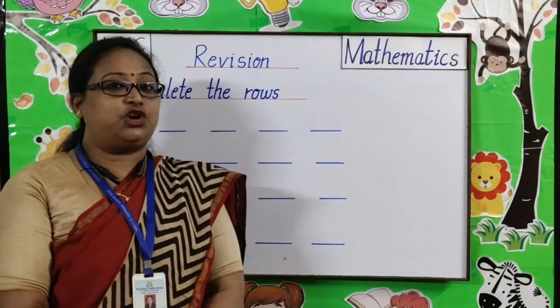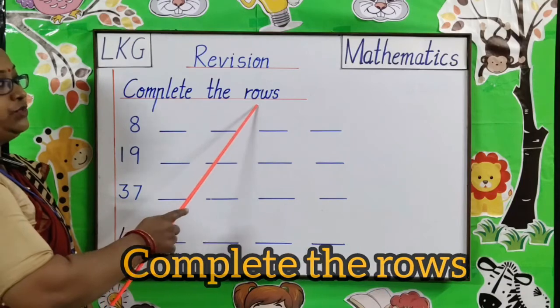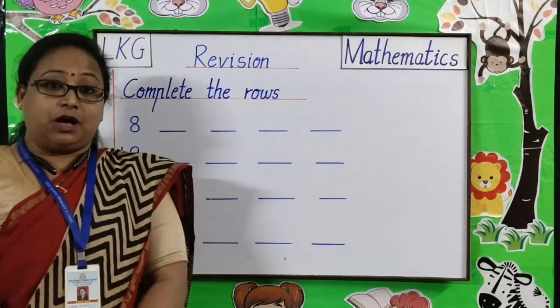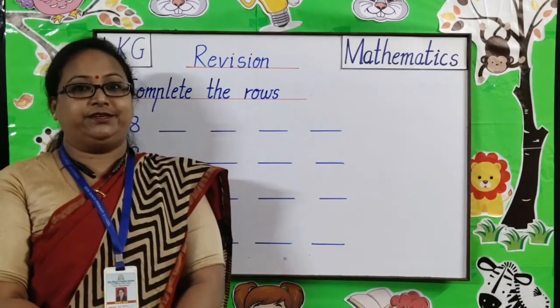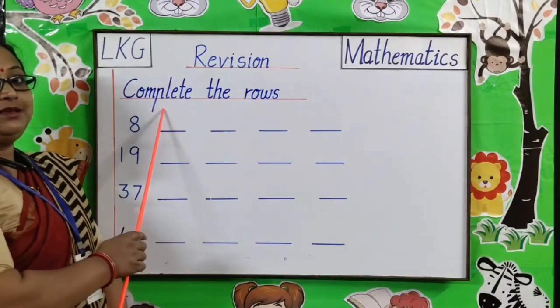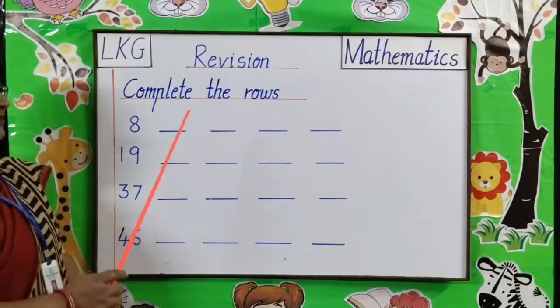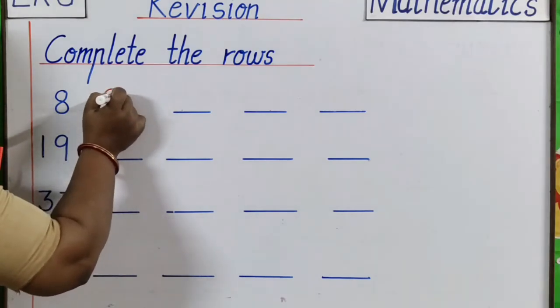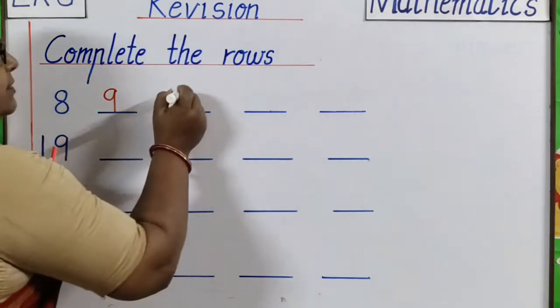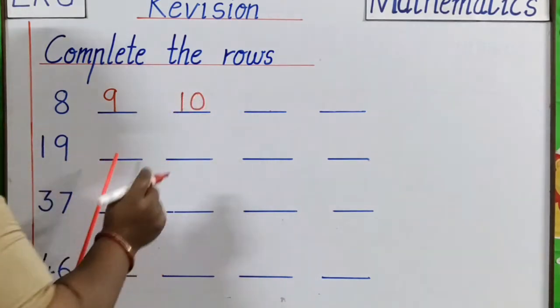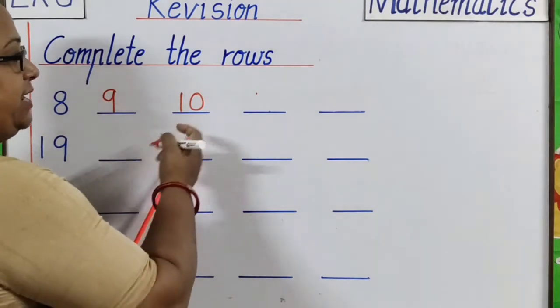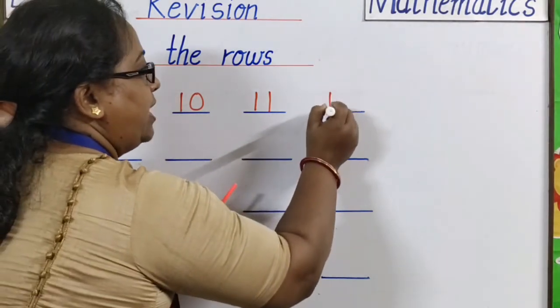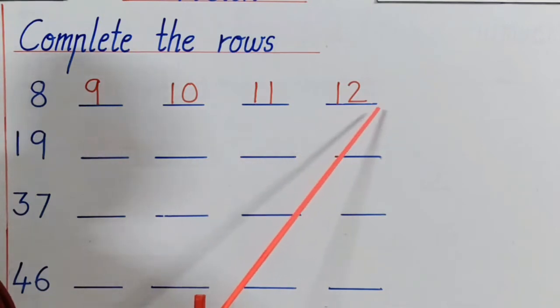Our next topic is complete the rows. Now children we have already learned counting numbers 1 to 50, so we can do this. Yes, let's start. Our first number is 8. After 8, 9. After 9, 10. Yes, very good. After 10, 11. After 11, 12. We have completed the line.